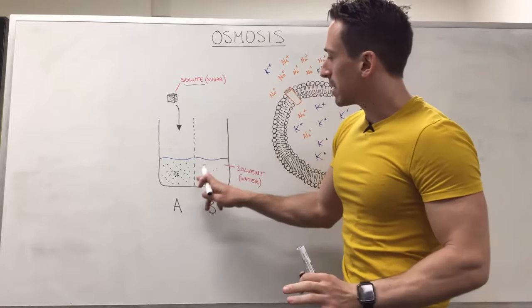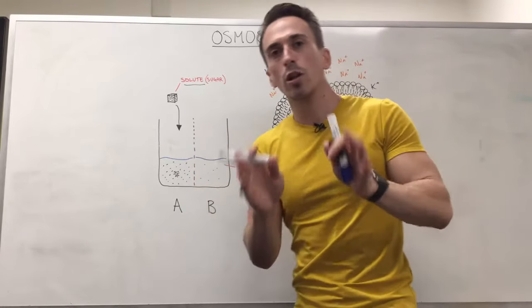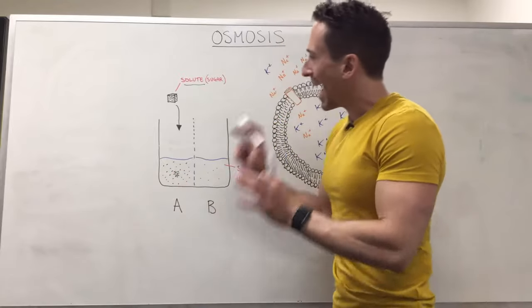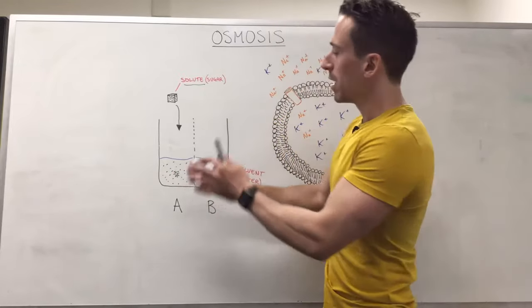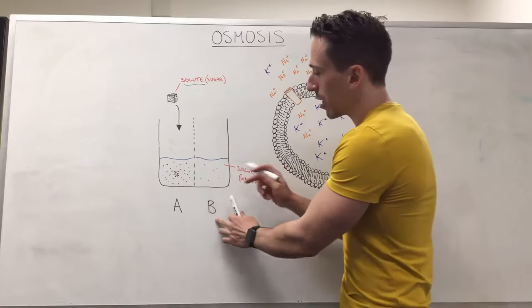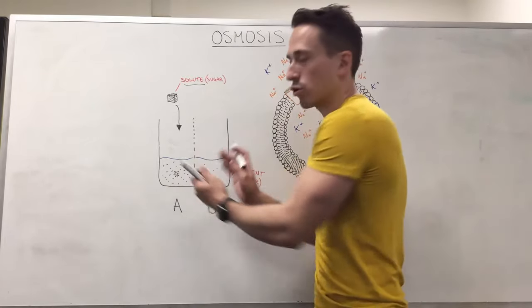Now this semi-permeable membrane does not let through these sugar molecules—they're too large. And so even though because of diffusion these solutes want to move across to side B until it's evenly distributed, they cannot.